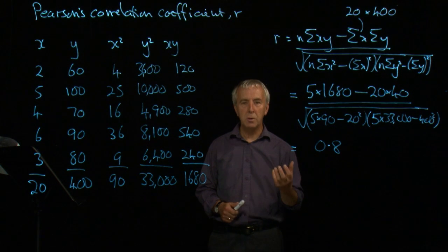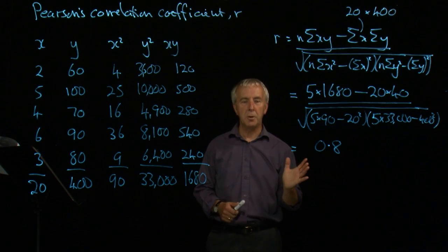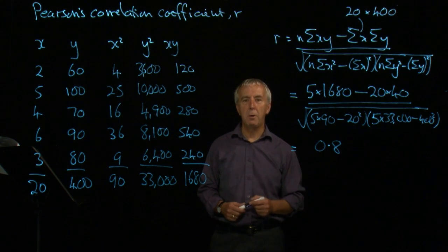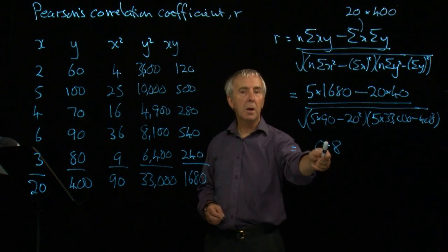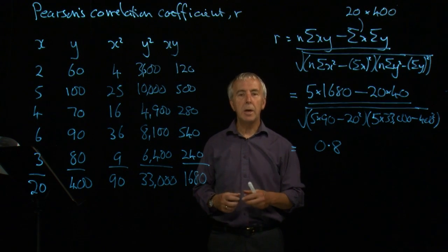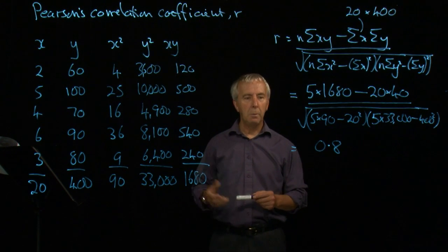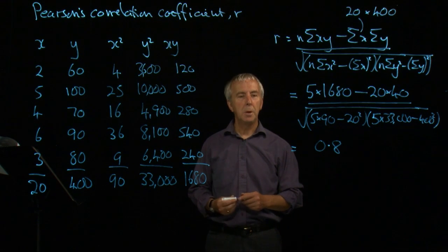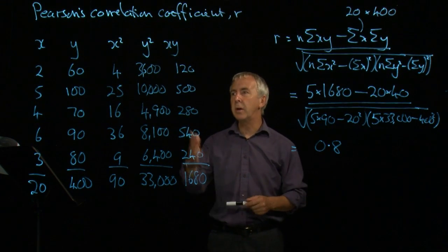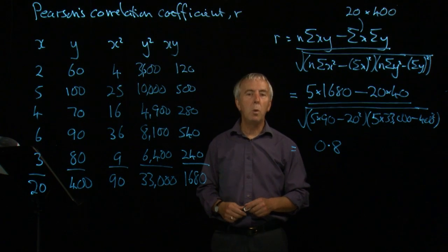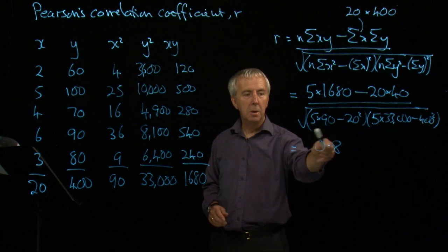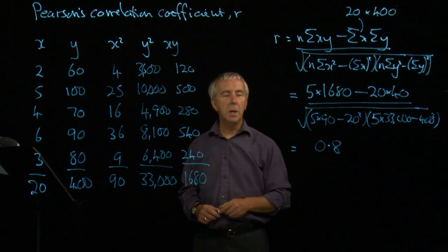And as we've seen before, a correlation coefficient of plus 1 means perfect positive correlation. Minus 1 is perfect negative correlation. This is very close to plus 1, so this indicates that this data has good positive correlation. And we can see on a scatter diagram that there is good evidence of a positive increase. As x goes up, so does y. They are positively correlated, and that's indicated by this number being near to plus 1.